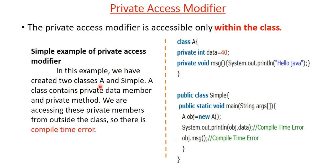In this example we have created two classes: Class A and Simple. Class A contains a private data member and a private method. We have declared a variable and a method as private in Class A. When we try to access the private method of Class A from another class, we get a compile-time error. This is because whenever we declare a variable or method as private, it can only be accessible from within that class — from other classes it is impossible.